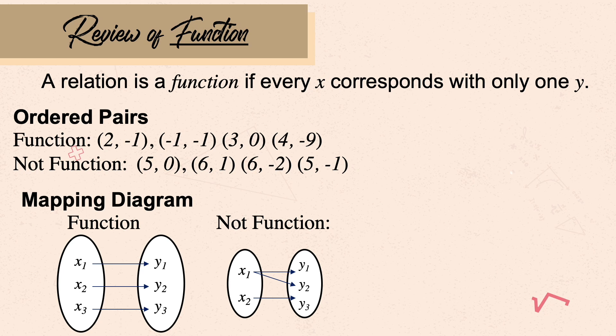In the first diagram, x₁ corresponds with only y₁, x₂ corresponds with y₂, and x₃ corresponds with y₃ — so this is a function. The second diagram is not a function because x₁ has two values of y, which are y₁ and y₂, violating the definition that every x must have only one y.